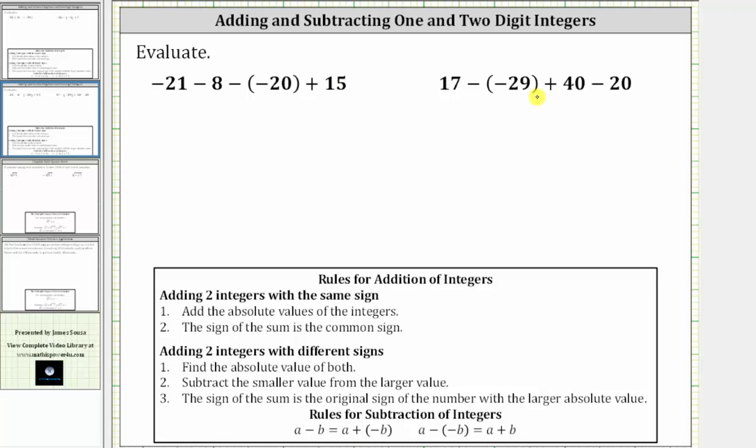For the first expression, we begin with negative 21 minus 8. We can think of the negative 21 as a loss of $21, and then for minus 8, we lose eight more dollars. So if we lose $21 and then lose eight more dollars, we have lost $29, which is why this first difference is negative 29.